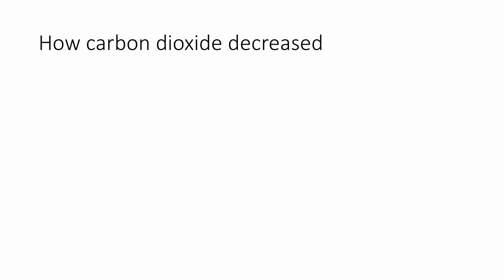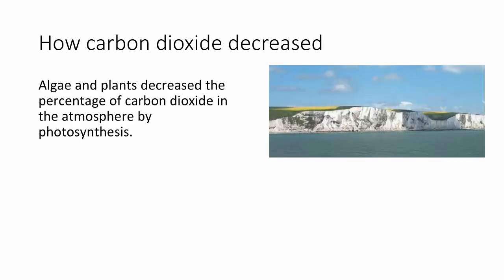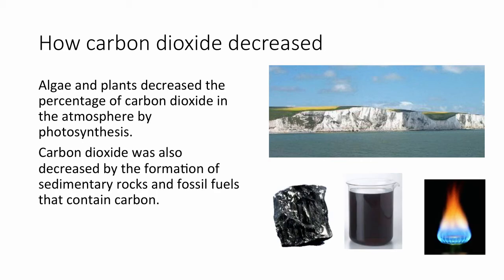How did carbon dioxide decrease? Algae and plants decreased the percentage of carbon dioxide in the atmosphere by the process of photosynthesis. When algae and plants died, they sank to the bottom of the oceans or ancient seas and were covered in sediment or sand, preventing decomposition because conditions were anaerobic. Over millions of years, heat and pressure turned this plant material into coal, gas, and oil. So carbon has been locked in fossil fuels and in sedimentary rocks.